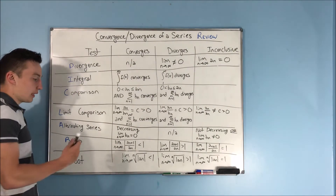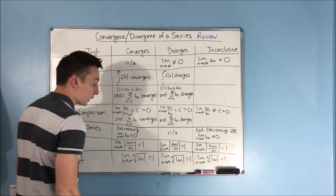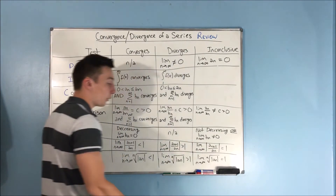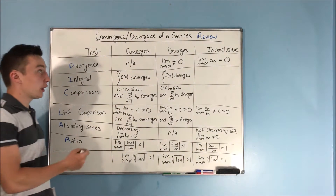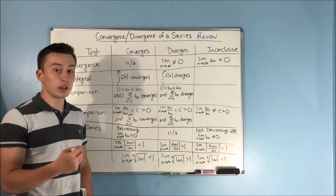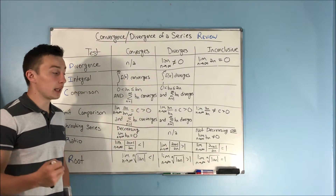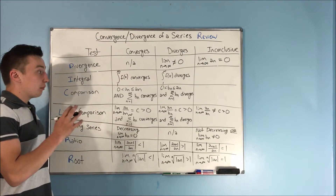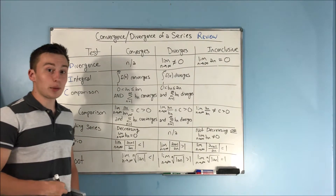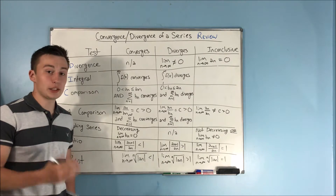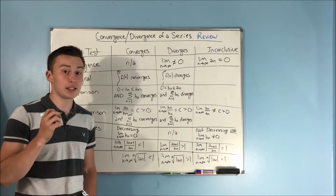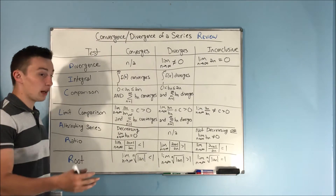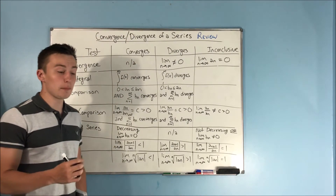With the root test, you're taking the nth root of the absolute value of a sub n, and again you're seeing if it's less than 1, greater than 1, or equal to 1 — and that's going to tell you whether it converges, diverges, or if it's inconclusive and you need to try another test. With all that being said, this isn't going to be terribly hard to memorize — with a lot of repetition it actually becomes a lot easier than you think. We're going to be doing a lot of example problems in the videos to come.